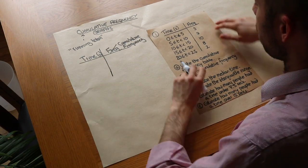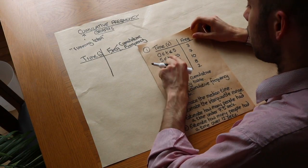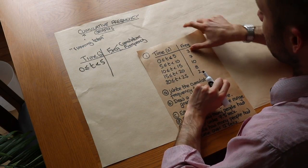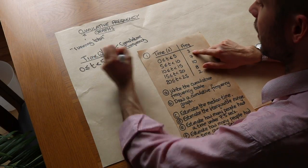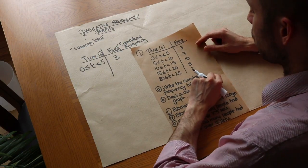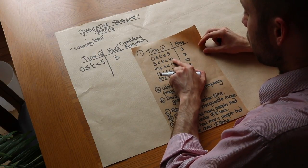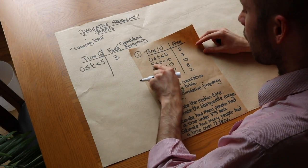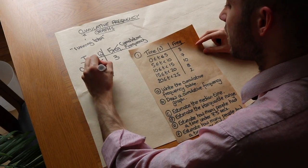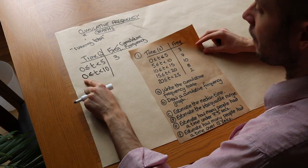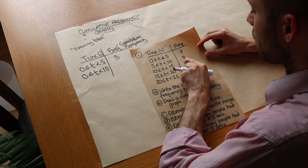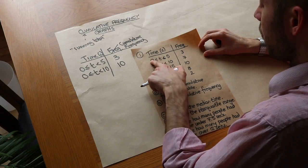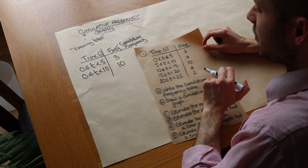The cumulative frequency is the running total of the frequency up to that particular row. For the range zero to five, the running total is just three, because that's the first interval. For the second row, we want the running total up until ten — all the way from zero seconds up to ten seconds. The running total of the frequency is ten: between zero and ten seconds, we've seen ten people in total.